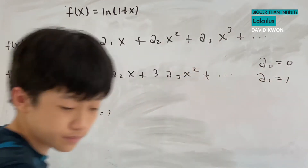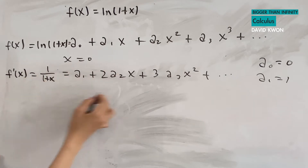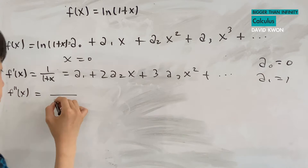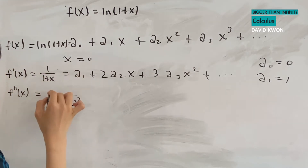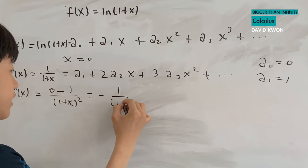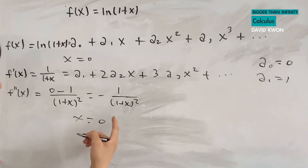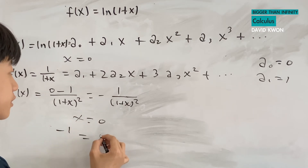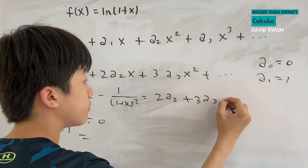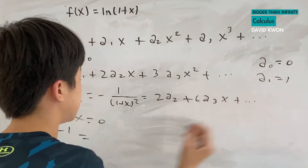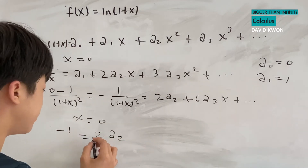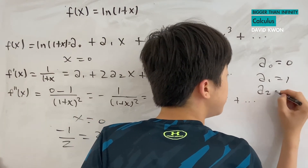Oh wait, that coefficient should be a₂. Now let's differentiate again to get f″(x). Using the quotient rule on 1/(1+x), I get negative 1 over (x+1) squared. When I put in x equal to zero, I get negative 1 on the left side, which equals 2a₂. Dividing both sides by 2, we get that a₂ is equal to negative one half.